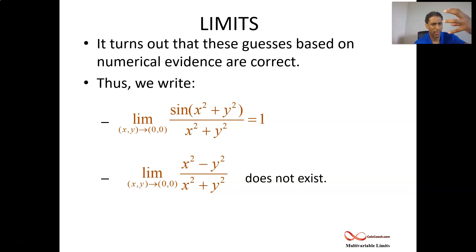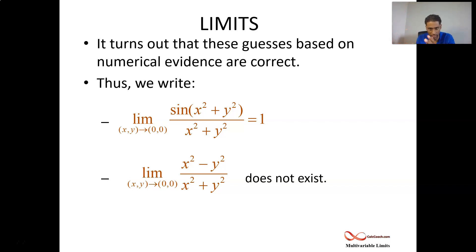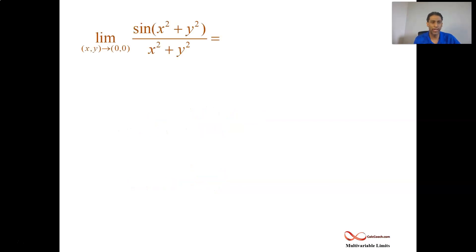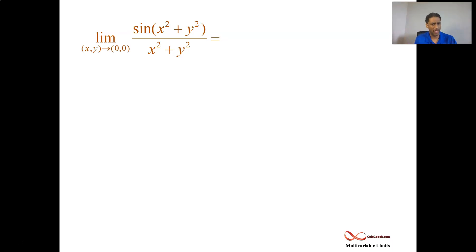We've got to be careful about what we write under lim now. It's not just x arrow a — now it's (x, y) arrow some point, here the origin. How can we prove that the f function was headed towards 1? We're going to go through a bunch of different limits and talk about how we can prove that the limit is equal to a constant.